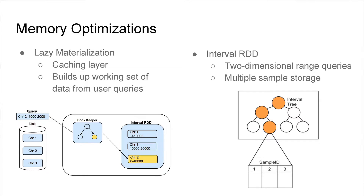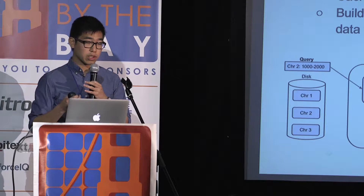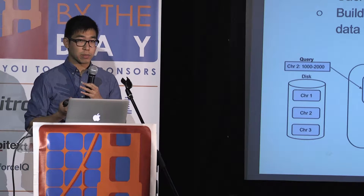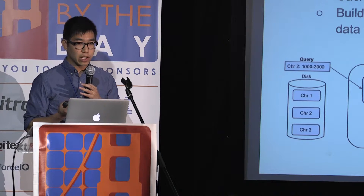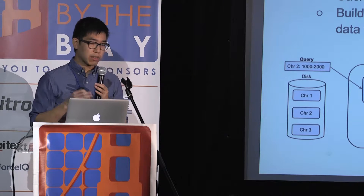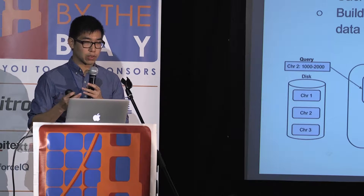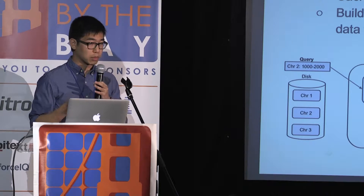For memory optimizations, we use lazy materialization. Since we're only viewing small chunks of data rather than the entire genome, it doesn't make sense to exhaust all cluster resources. We build up a working set of data based on user queries over time. We store this data in an interval RDD — backed by an interval tree rather than a standard array — optimized for two-dimensional range queries, such as fetching all alignment records or variants within an overlapping range, for example 1,000 base pairs on Chromosome 20.